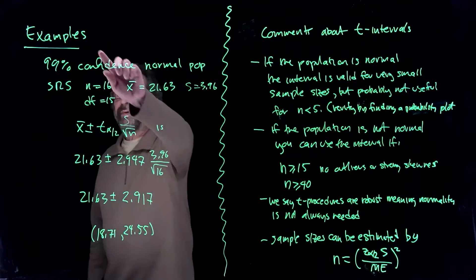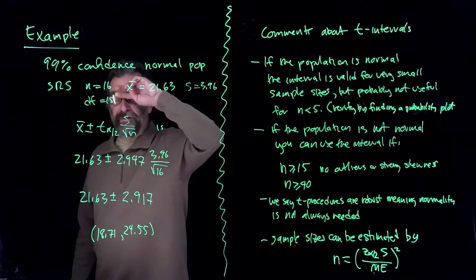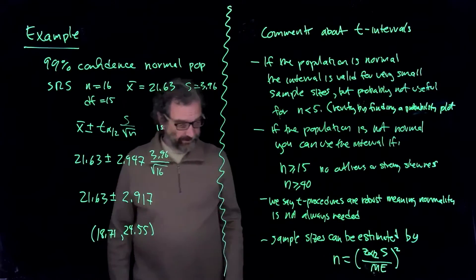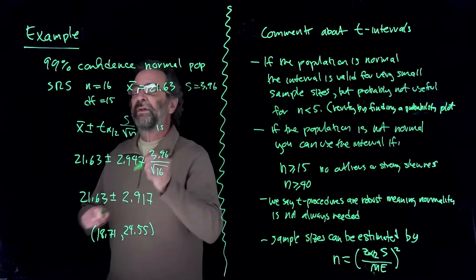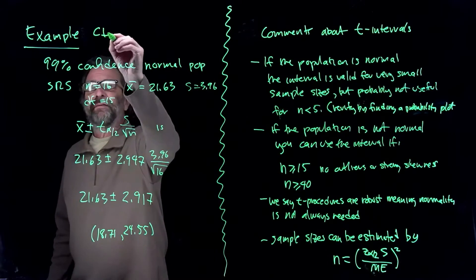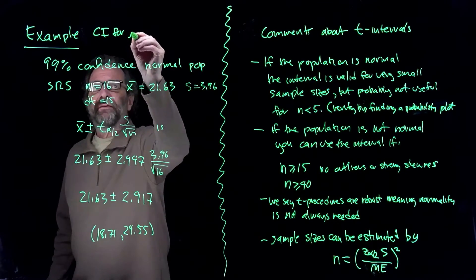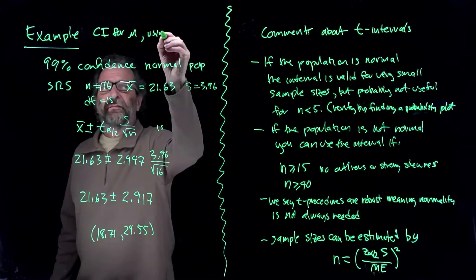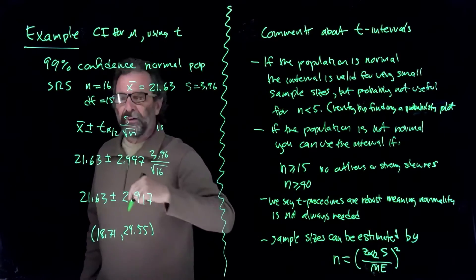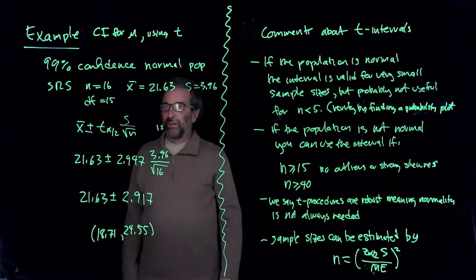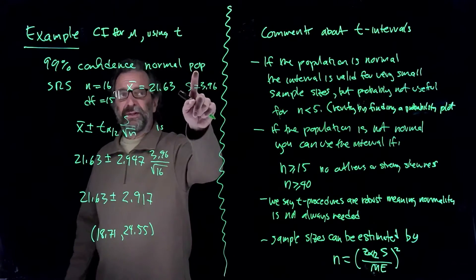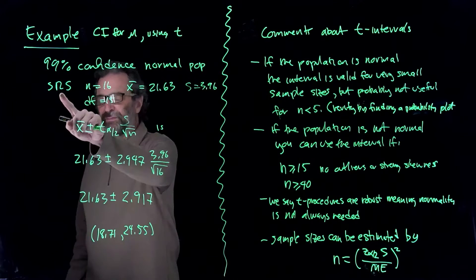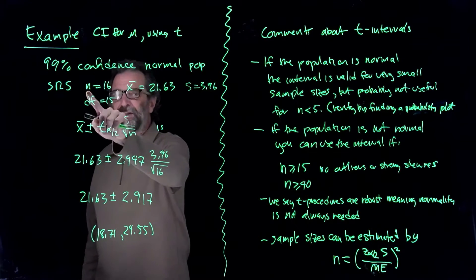So we're going to look at an example of a confidence interval for mu using T to do it. It's 99% confidence. We have a normally distributed population, so we don't need to check that. We've got simple random sampling. Here's the sample size 16.